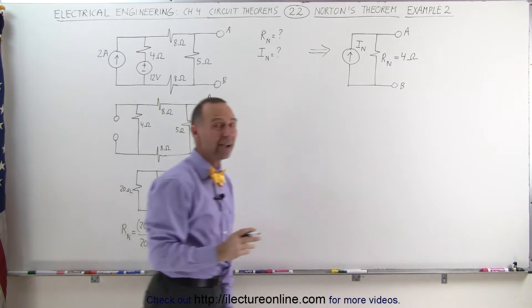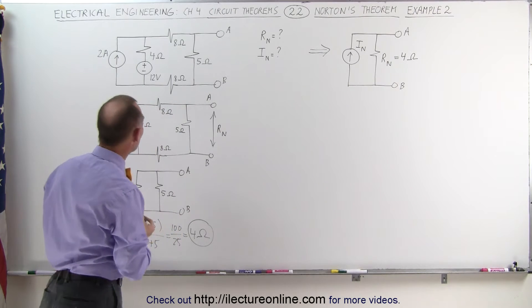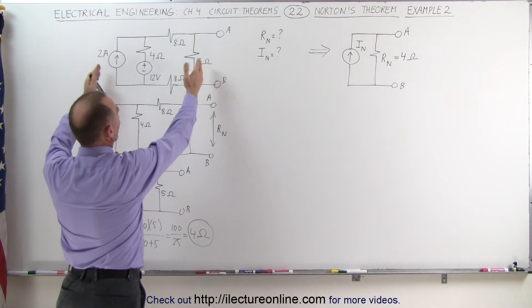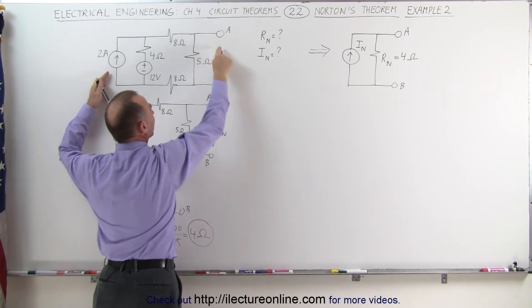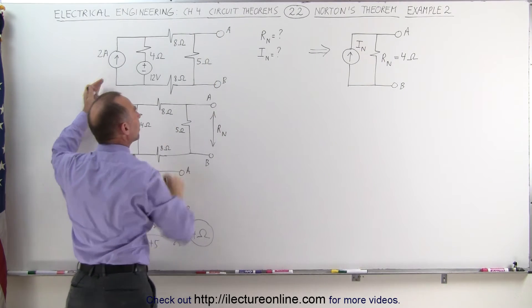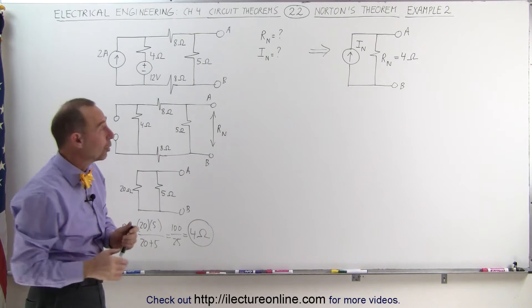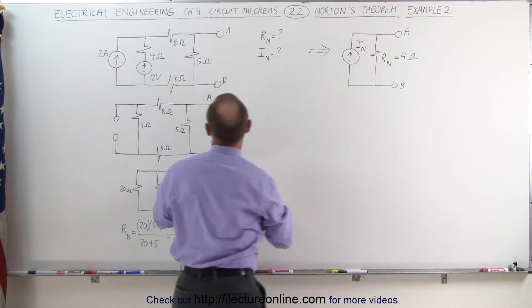Now we still need to find the Norton current. How do we do that? We take the original circuit right here, the original circuit and we short out the terminals from A to B. And then see how much current would go between A and B and that would be the Norton current. So let's take our circuit.